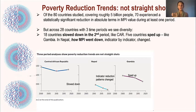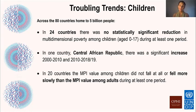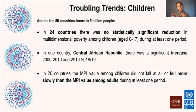But it's not all rosy. Across the 28 countries with three time periods, 18 countries slowed down poverty reduction in the most recent period, and only five sped up. A troubling factor is children: of those 80 countries studied, in 24 there was no change among children — no reduction in child poverty. In one country poverty increased, and in 20 it fell but more slowly than for adults. So in nearly half of the countries, children are falling further behind.